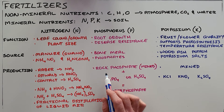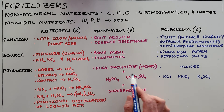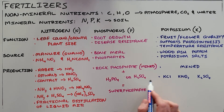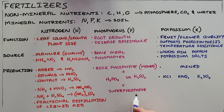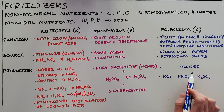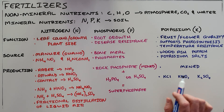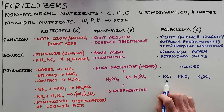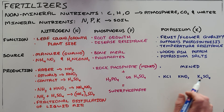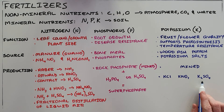Phosphorus is most often found in rock phosphates, which are combined with phosphoric acid or sulfuric acid to form a superphosphate. Potassium is most often mined and comes in the form of potassium chloride, potassium nitrate, or potassium sulfate.